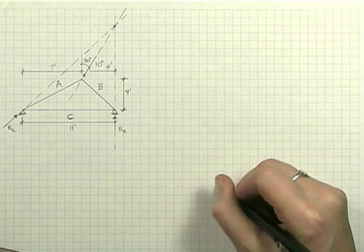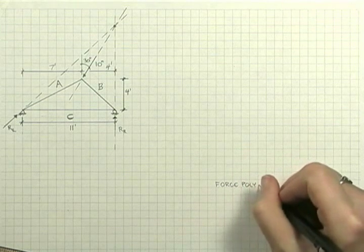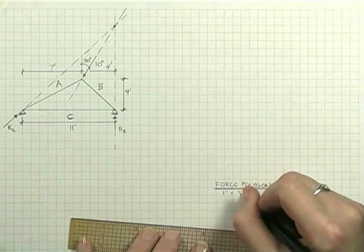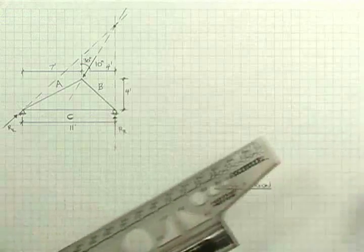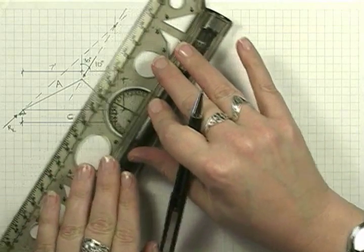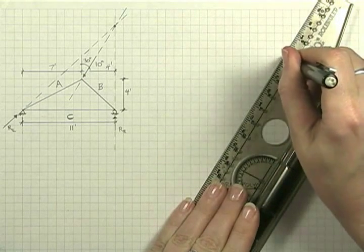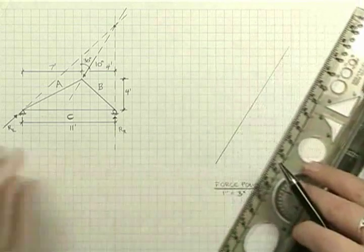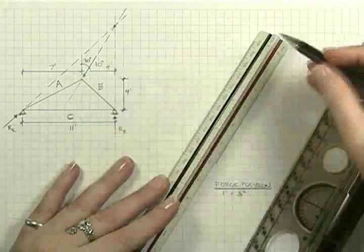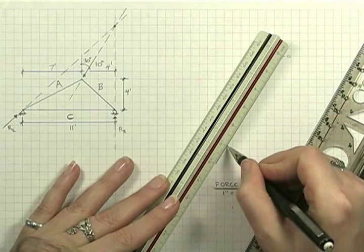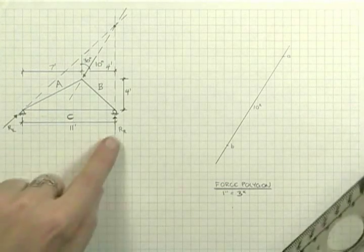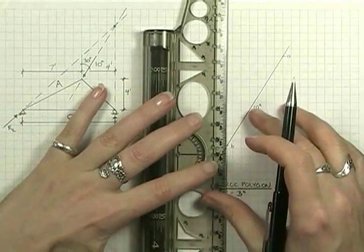From this, we can construct our force polygon, using a scale of 1 inch equals 3 kips. We begin by transferring the angles — that's the line of action of the original force, 10 kips. We scale its magnitude, going from point A to B, with a magnitude of 10 kips. The right-hand reaction is vertical; that's all we know to begin with, we don't have the magnitude yet.